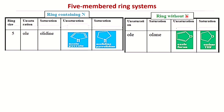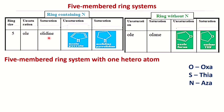If the ring contains oxygen or sulfur instead of nitrogen, and the ring is unsaturated, the suffix given is '-ole', same as for nitrogen. If it is completely saturated with no double bonds, the suffix becomes '-olane'. The prefix for oxygen is 'oxa-', for sulfur 'thia-', and for nitrogen 'aza-'.